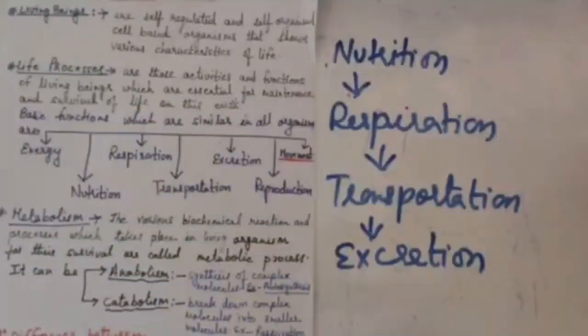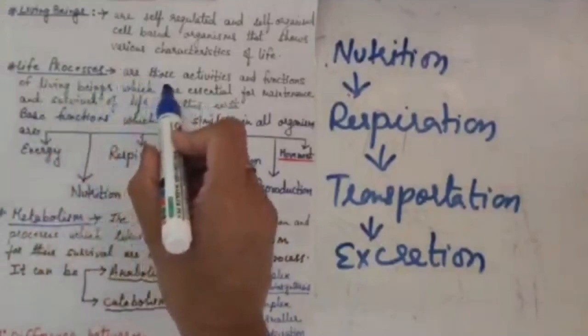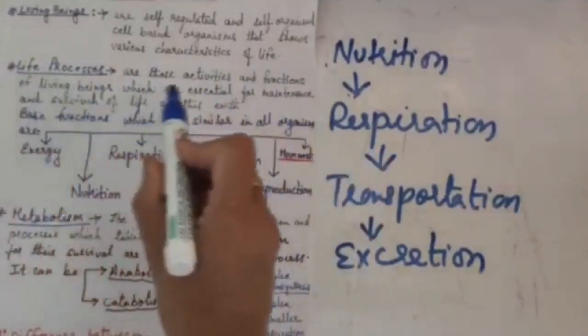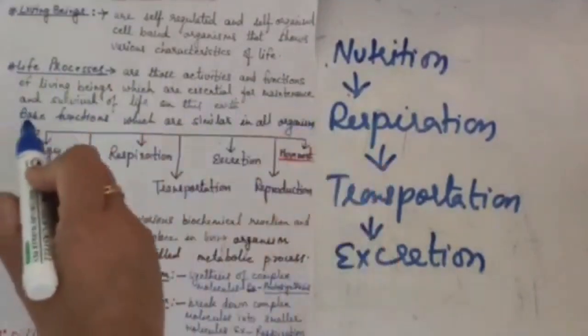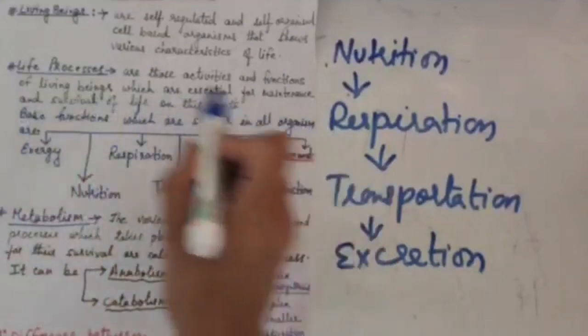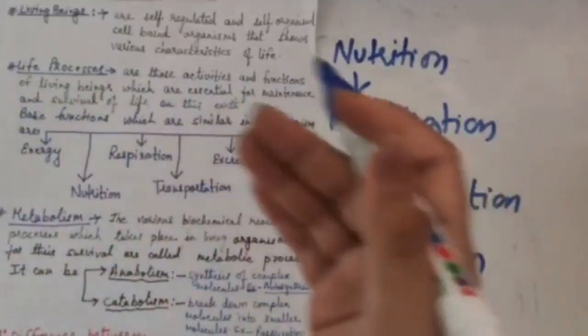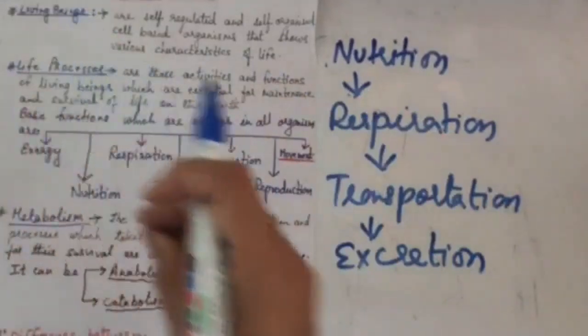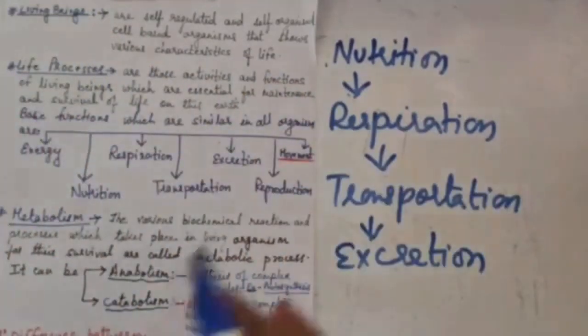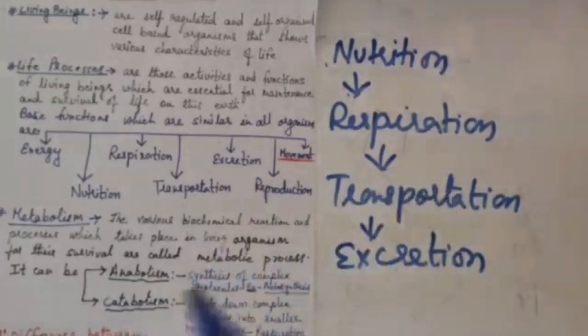Next we will be dealing with the definition of life process. Life processes are those activities and functions of living beings which are essential for maintenance and survival of life on this earth. These are all the basic functions which are similar in all organisms. So we can say that life processes occur in both unicellular and multicellular life forms.